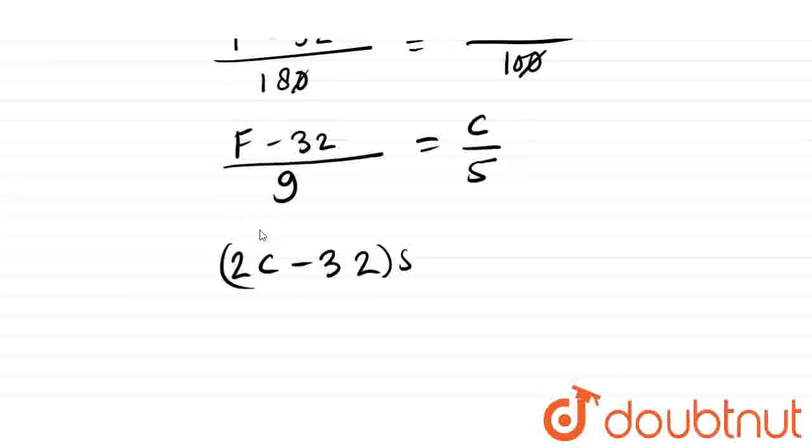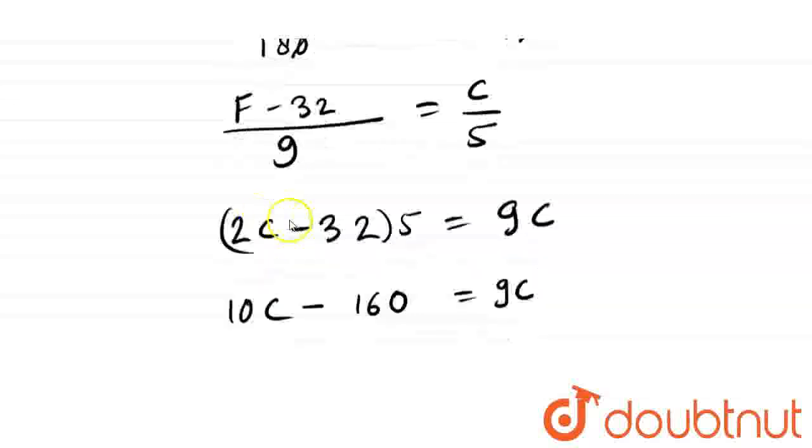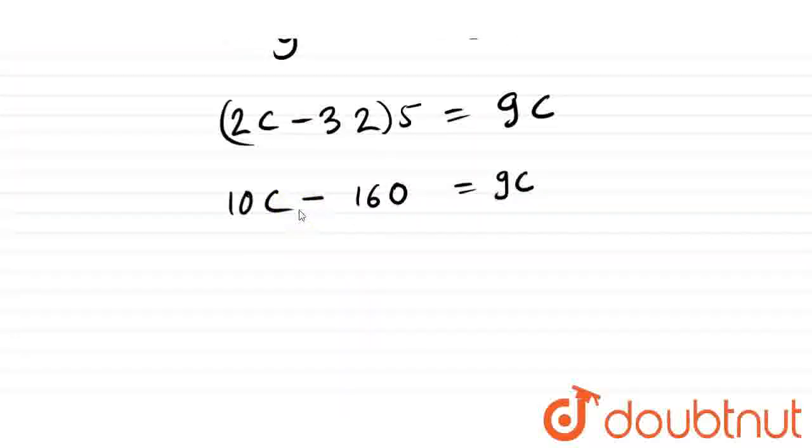This is cross multiplication, 9 into C. So I will simplify it. So we can write 10C minus 32 into 5. That is 160 equal to 9C. So 10C minus 9C equals 160. C is 160.